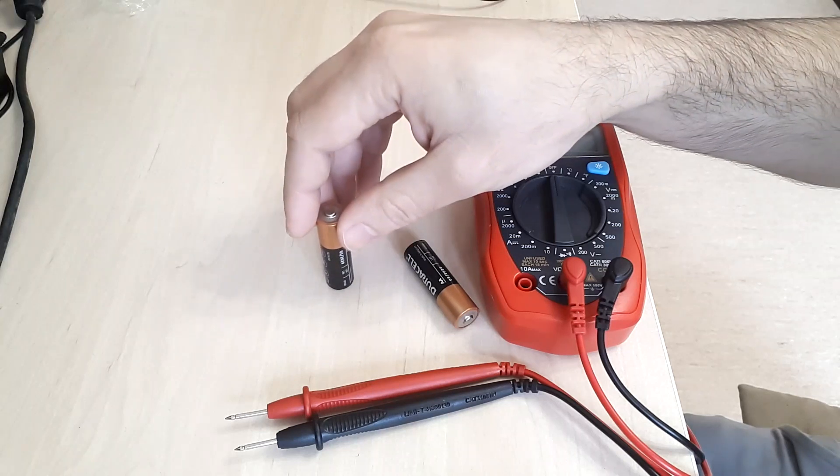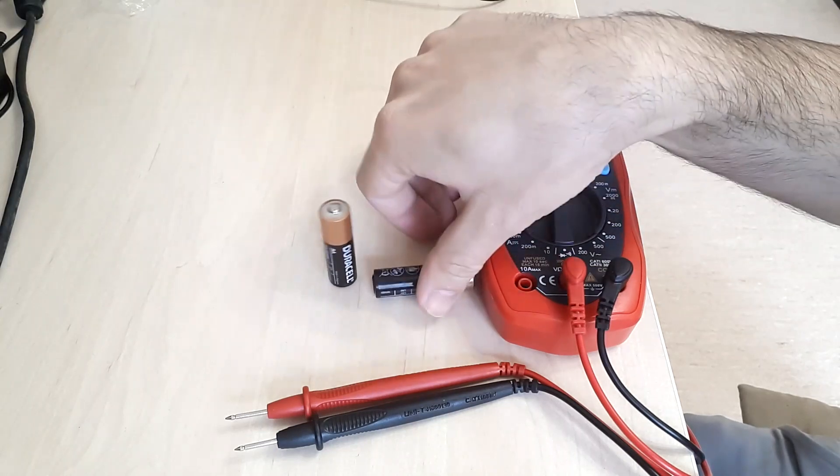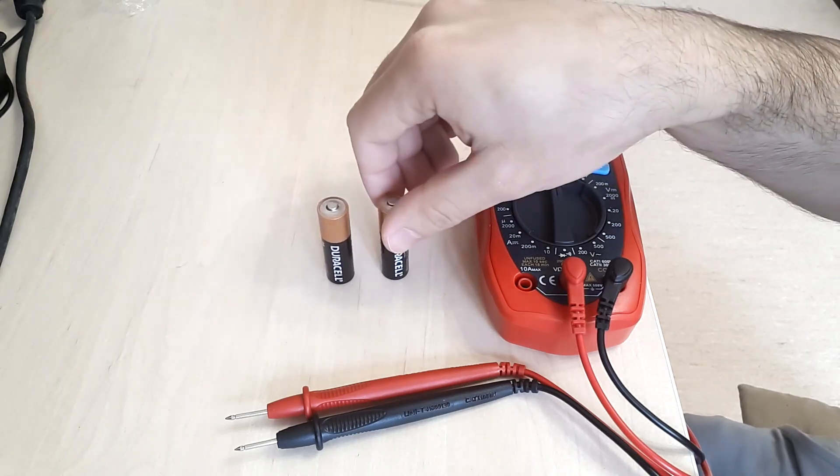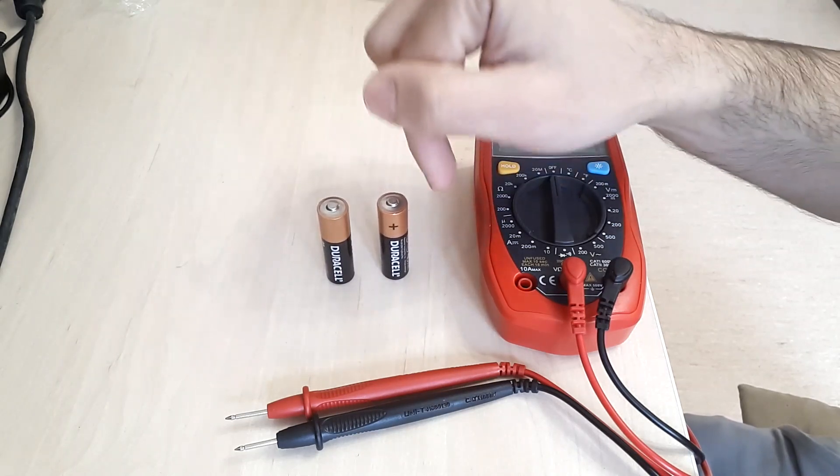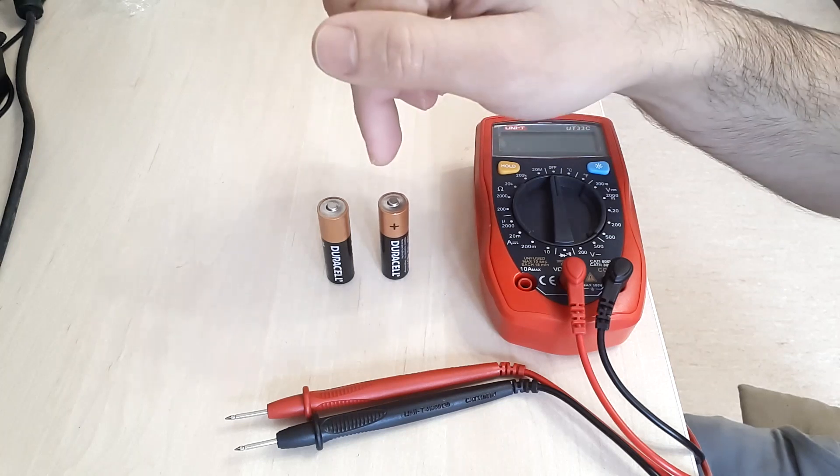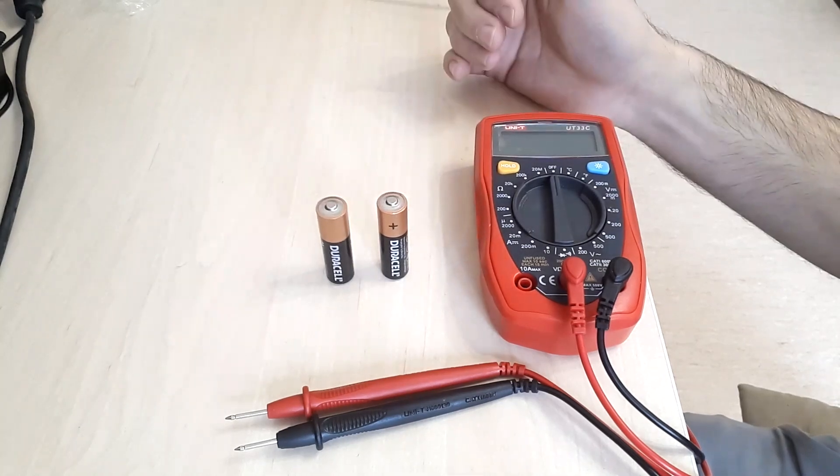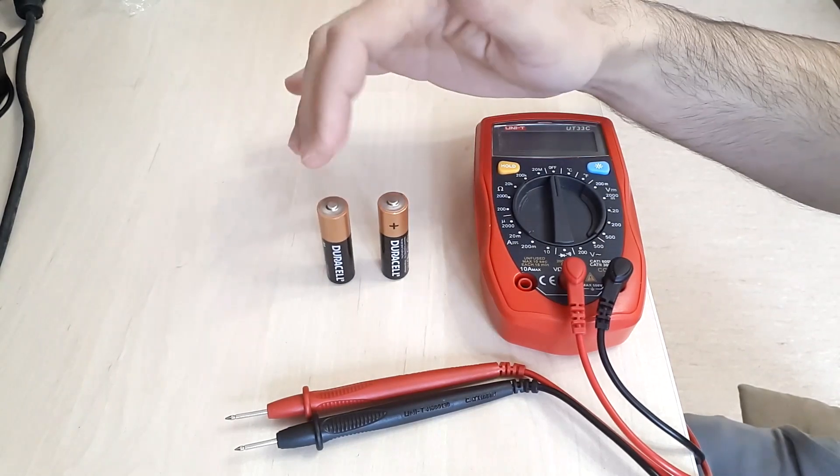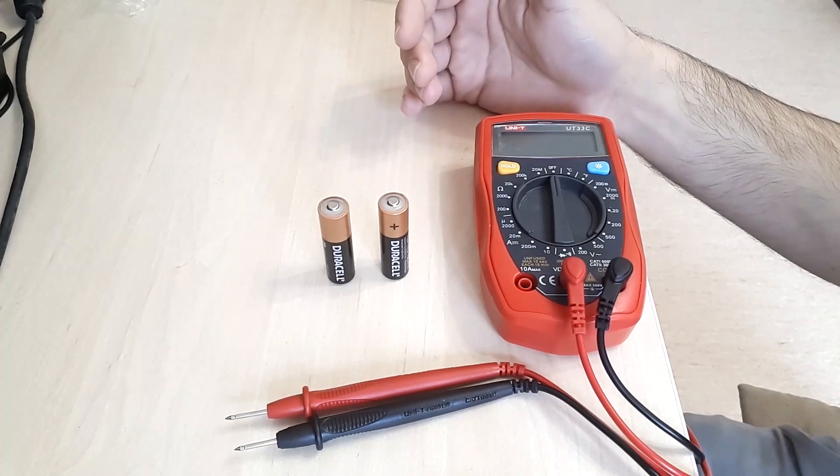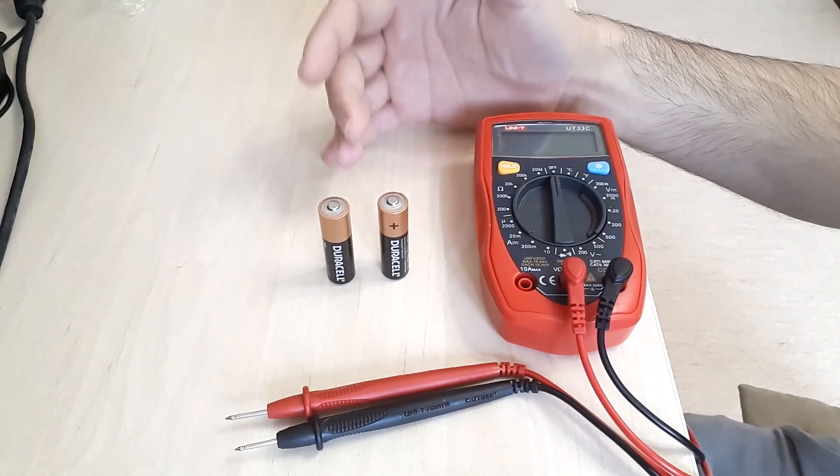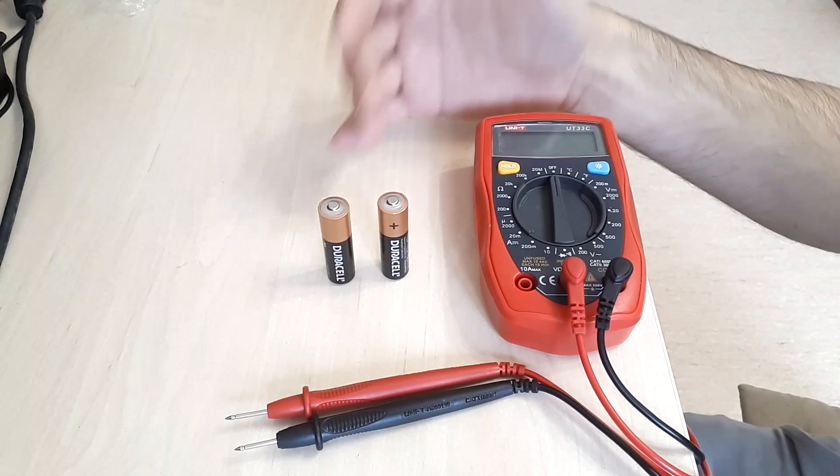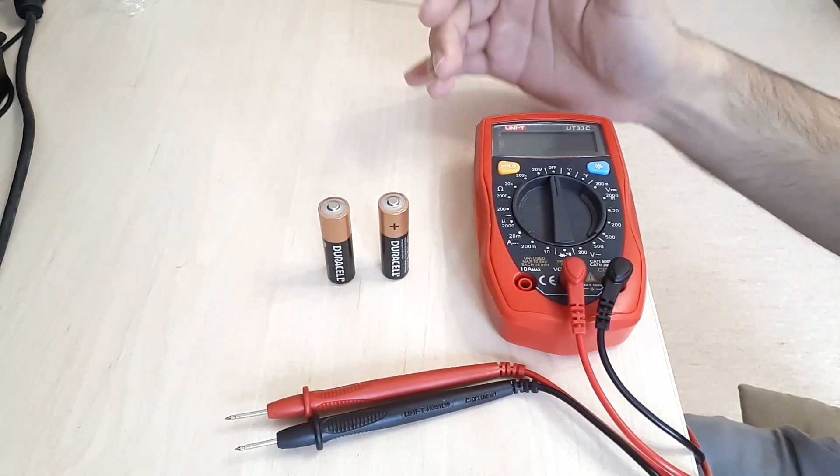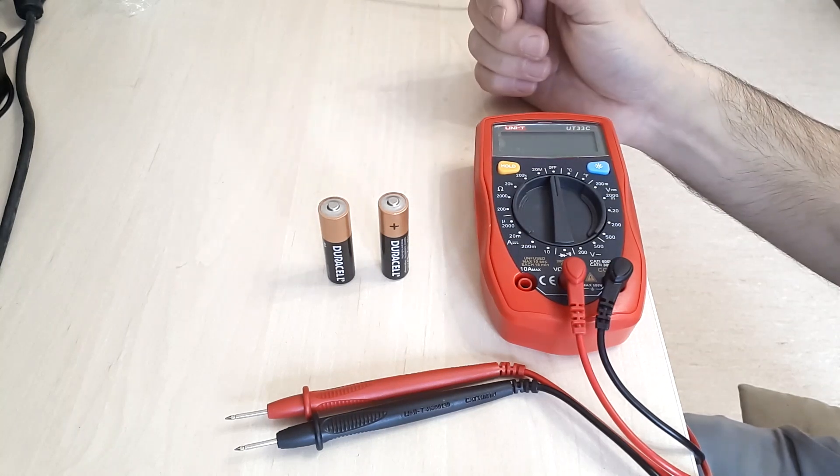It matters a lot because it represents a parasite load. This parasite load needs to be overcome by the other batteries in the set. This means that they will be additionally stressed before the battery that has this behavior is going to reverse to the normal situation. This means that all the other batteries in the set are going to have an additional stress, and they will have a reduced life.